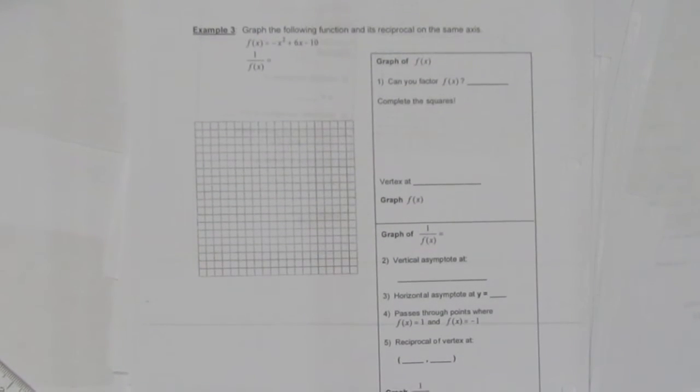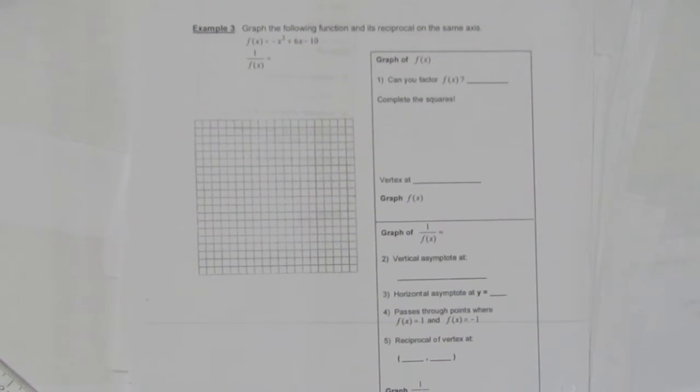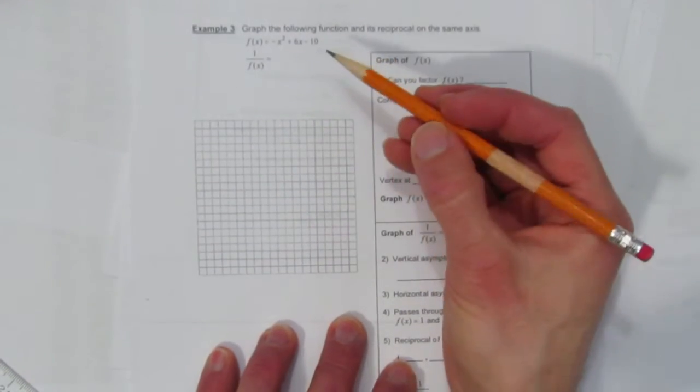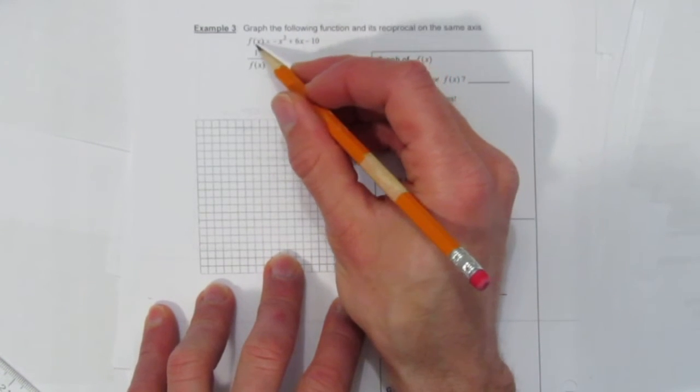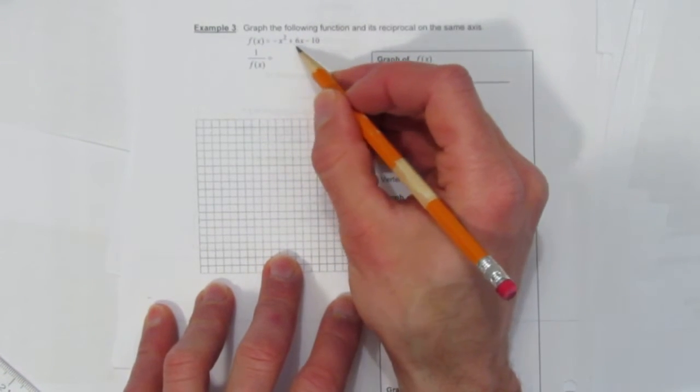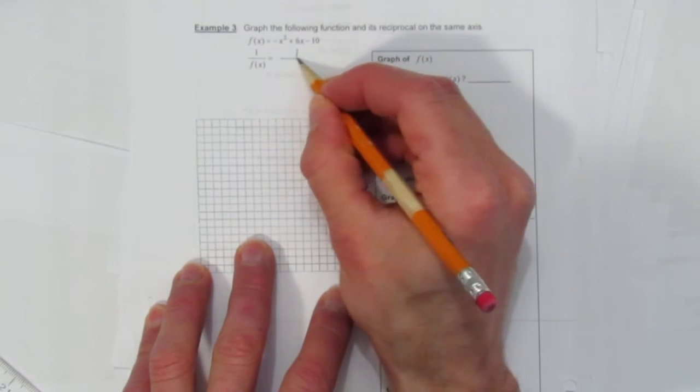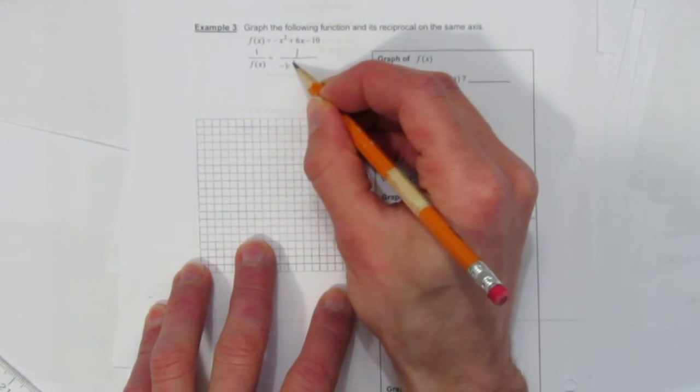In this video, we'll look at how to graph a reciprocal function. In particular, this reciprocal function is a quadratic that will have no zeros. The function we're going to graph is 1 over f(x), and f(x) is negative x squared plus 6x minus 10. Our goal, to graph the reciprocal of that.